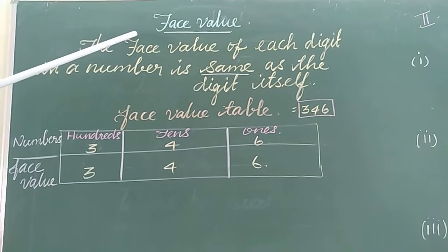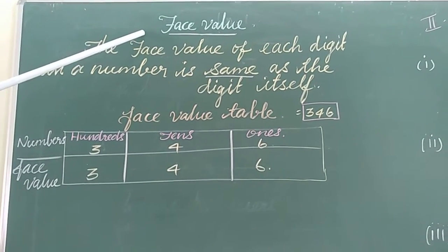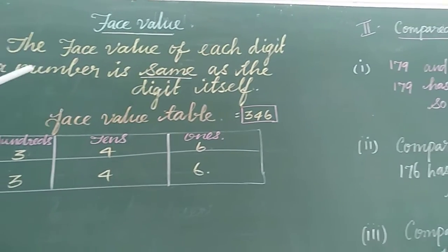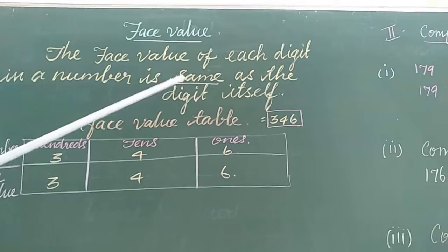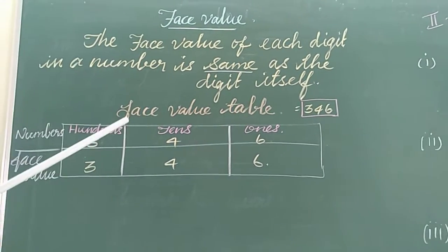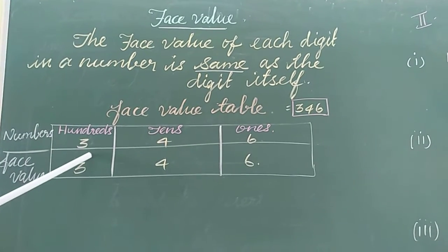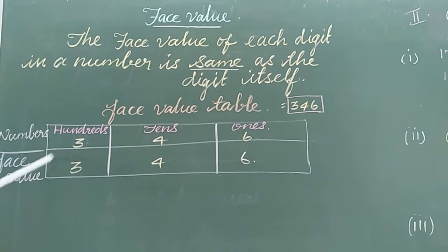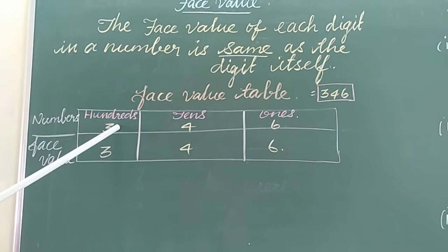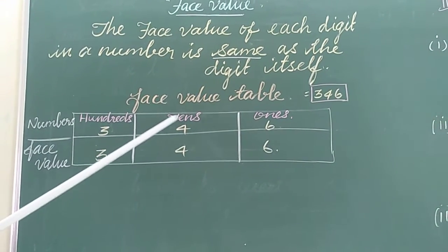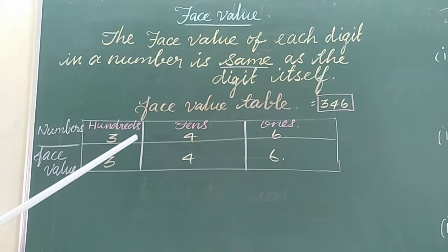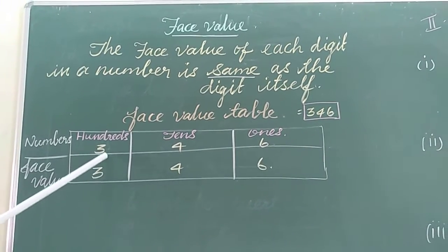Let's learn face value of digits. What is face value? The face value of each digit in a number is same as the digit itself. Here too, I mention a box to create face value table. To make 3 columns, to write first one is 100s, second one 10s, third one 1s. Here, you mention in case of place value, that is face value.